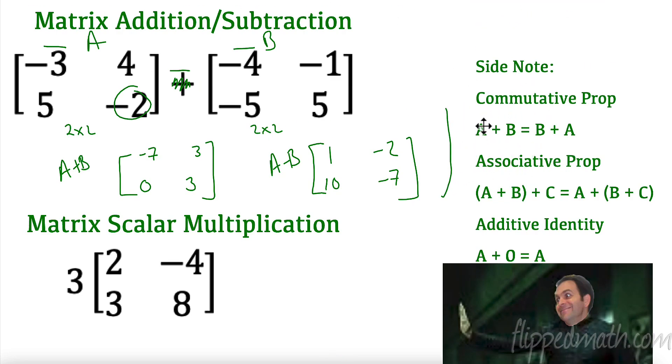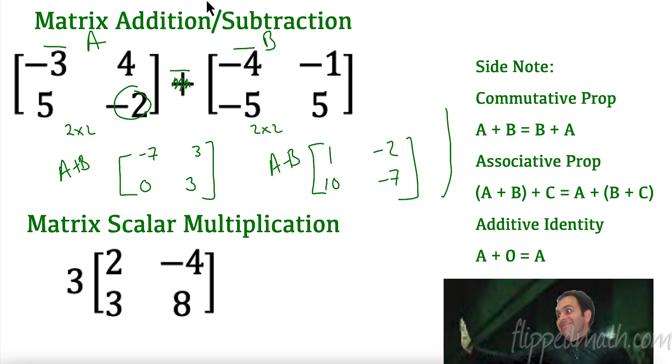Addition with matrices is commutative. That means I could do A plus B or I could switch it and do B plus A. So if I add negative 4 plus negative 3, if I had switched the places, it would in fact work. The associative property, it works as well. The identity property, alright? If I have a matrix made up of all zeros, components are all zeros, that would be the identity property. I could add those together and I would have A plus the zero matrix would equal A. So all of those things work.